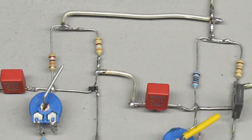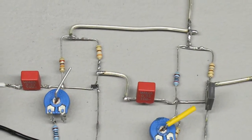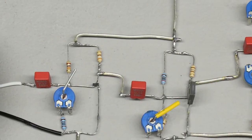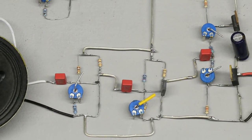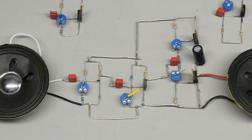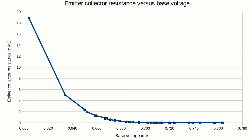After the very academic videos about the functionality and properties of semiconductor devices, we will now start to create some practical circuits. Amplifying circuits will be built and examined using bipolar junction transistors. The curve progression shown here was recorded in the video about the electrical properties of bipolar junction transistors.